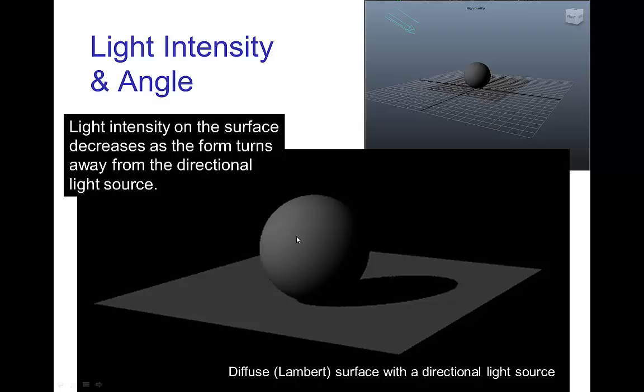And as we turn and go towards the back, the light is getting dimmer and dimmer as it is spreading over the area which is turning away from the source. And then behind the sphere, no light is reaching that part.